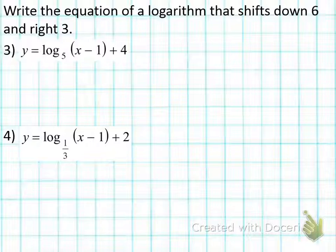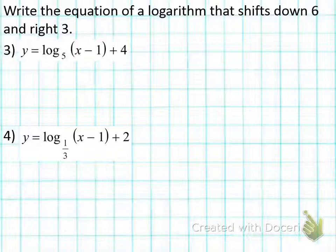Number three, let's do it together. The question says write the equation of the logarithm that shifts down six and right three. Write the original problem down — we're going to do this one together. We're going to shift it down six and right three. First, figure out what your K is — K is positive four. We need to shift this down six, so four minus six is negative two.